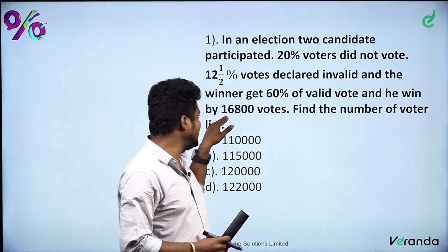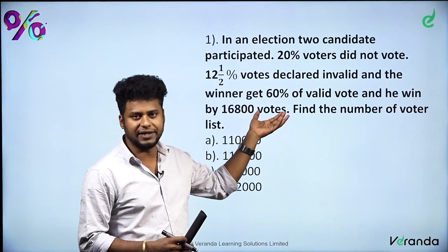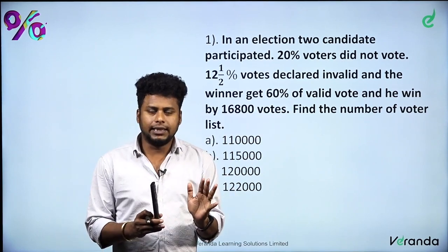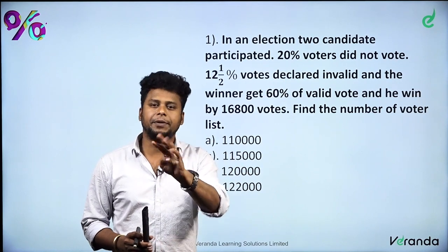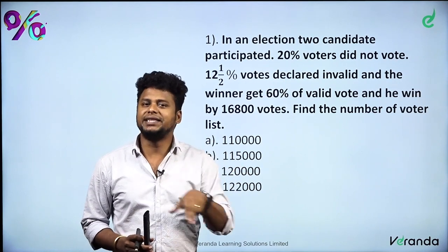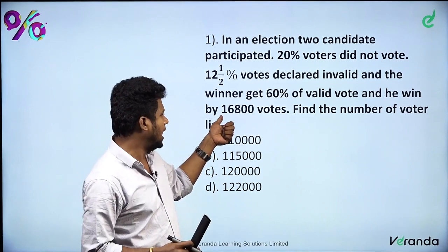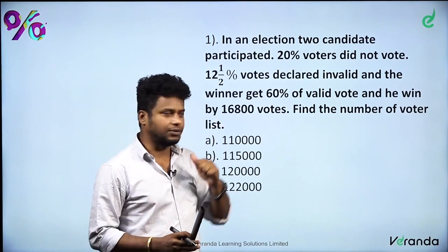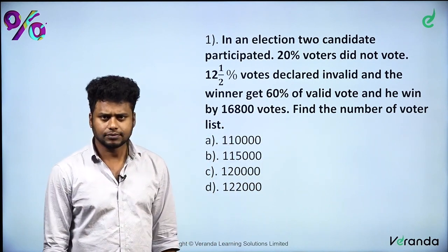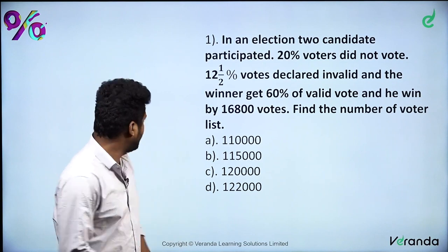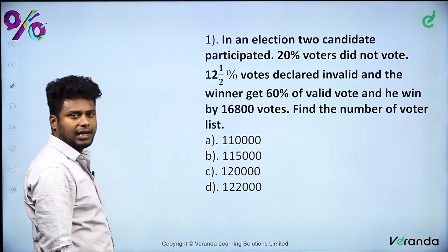He won by 16,800 votes. Find the number of voters on the voters list. Let's talk about the logical method and the conventional method.